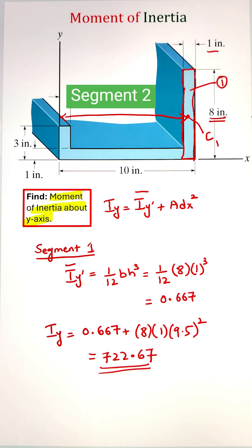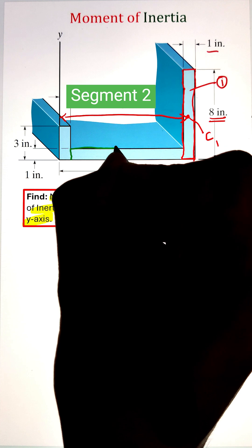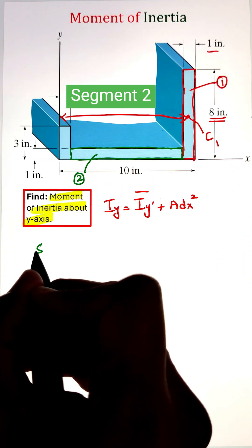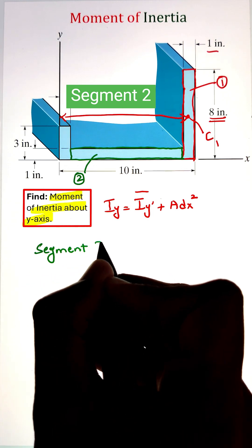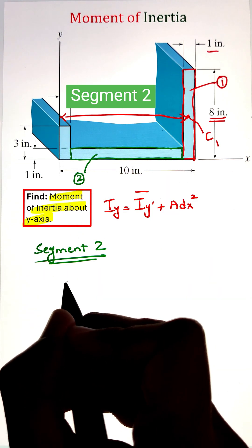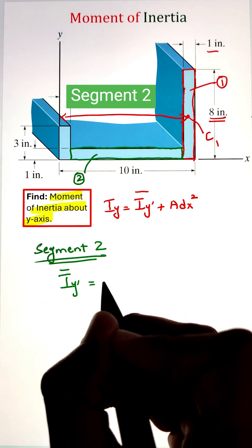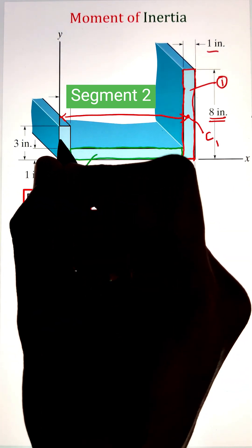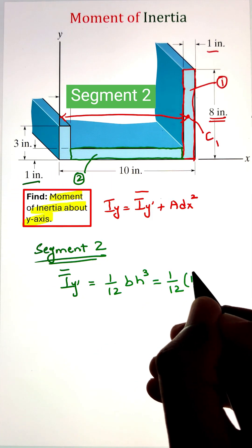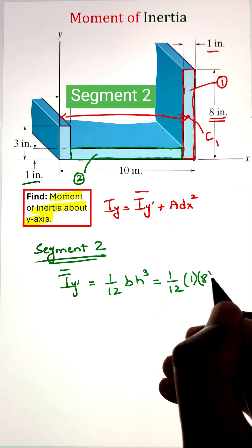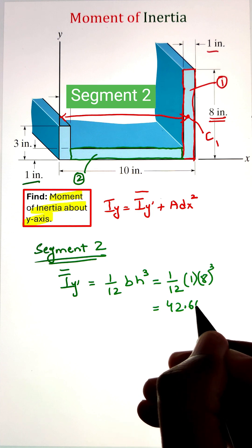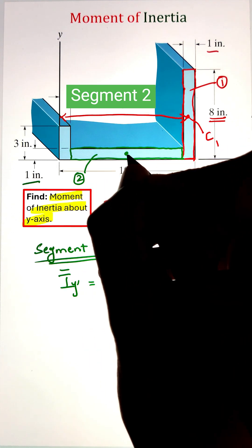Now let's look at segment two. The dimensions of segment two are eight by one inches. The first thing we have to do is calculate the moment of inertia about the centroidal axis of this segment. The value of base will be one inch as it is parallel to the y-axis, whereas eight inches is the dimension perpendicular to the y-axis, which will be the height of the rectangle. The value of the moment of inertia about the centroidal axis is 42.67 inch raised to the power four.